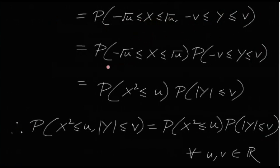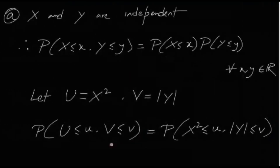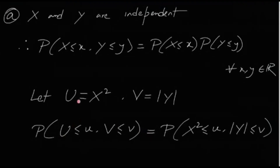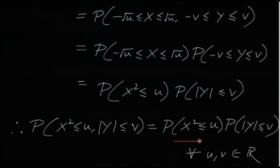This splits into P(X lies between -√u and √u) times P(Y lies between -v and +v), which is just P(X² ≤ u) · P(|Y| ≤ v). Therefore the joint CDF of U and V equals the product of their marginal CDFs, meaning X² and |Y| are also independent.